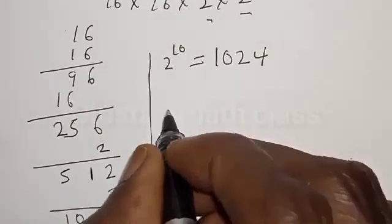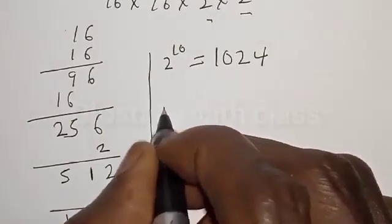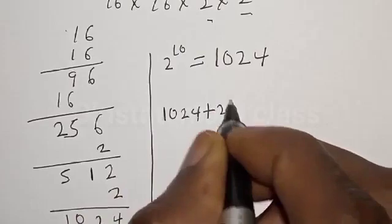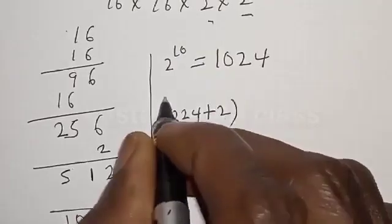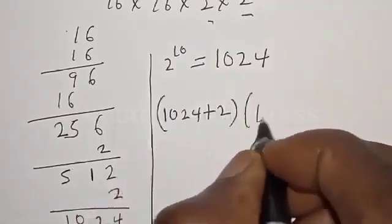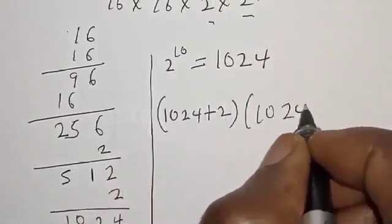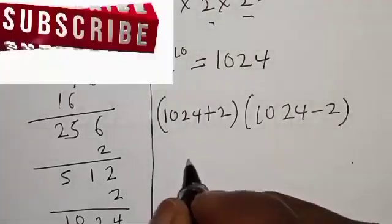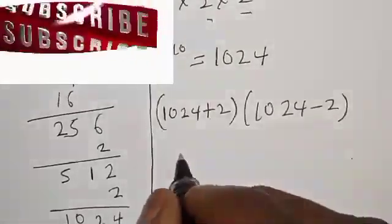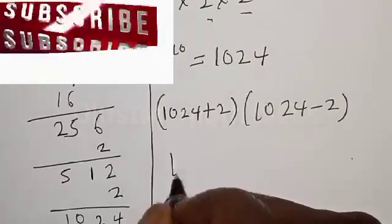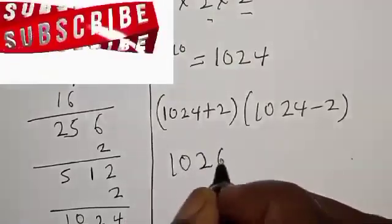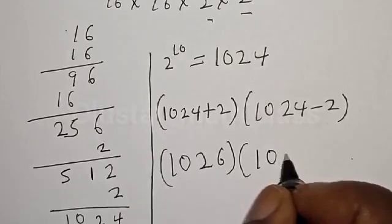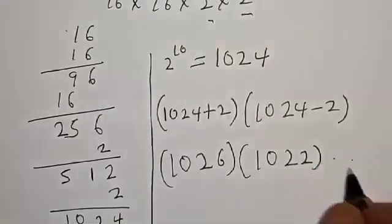Now let's substitute. We have 1024 plus 2 into 1024 minus 2. That gives us 1024 plus 2, which is 1026, multiplied by 1024 minus 2, which is 1022. Now let's multiply 1026 by 1022 to get the final answer.